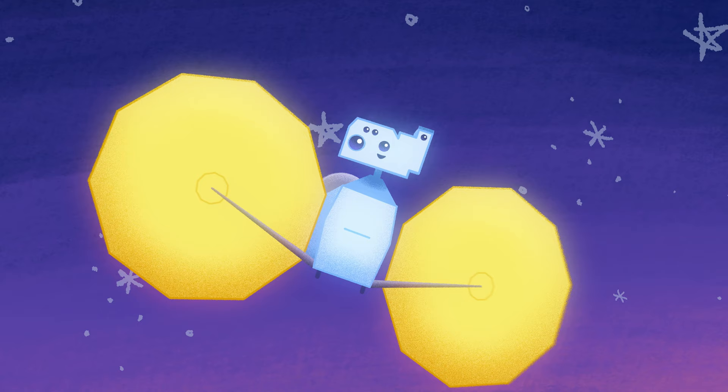So the only places, it turns out, in the outer solar system where you can find stable regions are these Lagrange points.